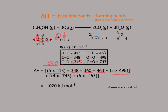On the product side, we have C double bond O twice, but we also have a coefficient of two, so that gives us a total of four C=O bonds. They've applied the negative to each product term instead of subtracting at the end, so that's four times negative 743. Then we have two H-O bonds per water molecule, but with three water molecules that gives us six, so six times negative 463. When you work through the math, you get an overall delta H for the bond enthalpy of negative 1,020 kilojoules per mole.